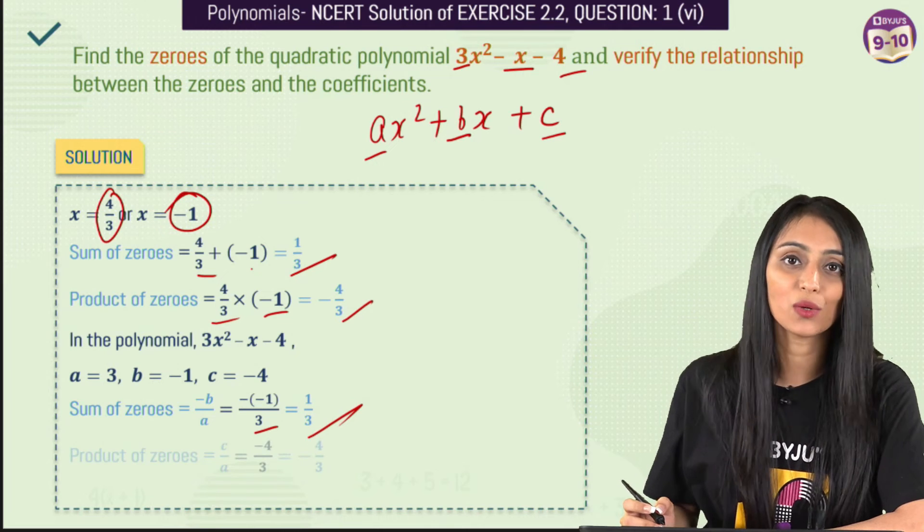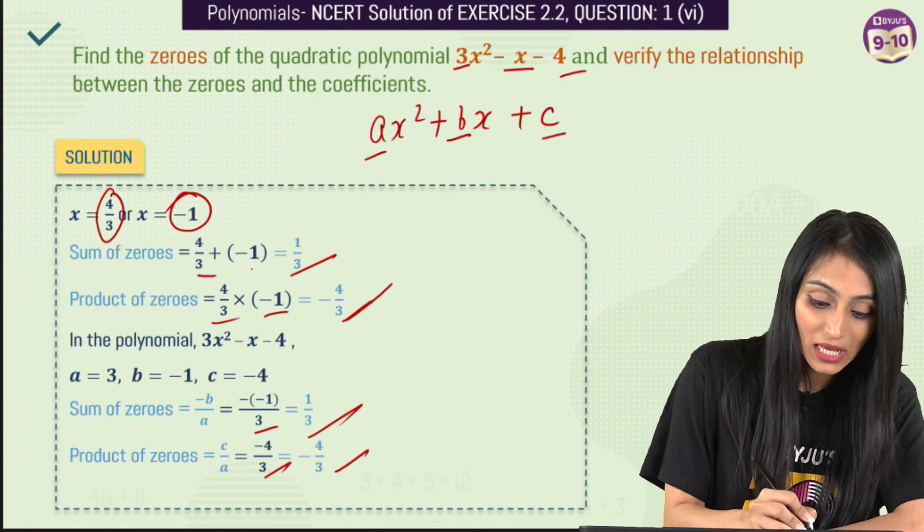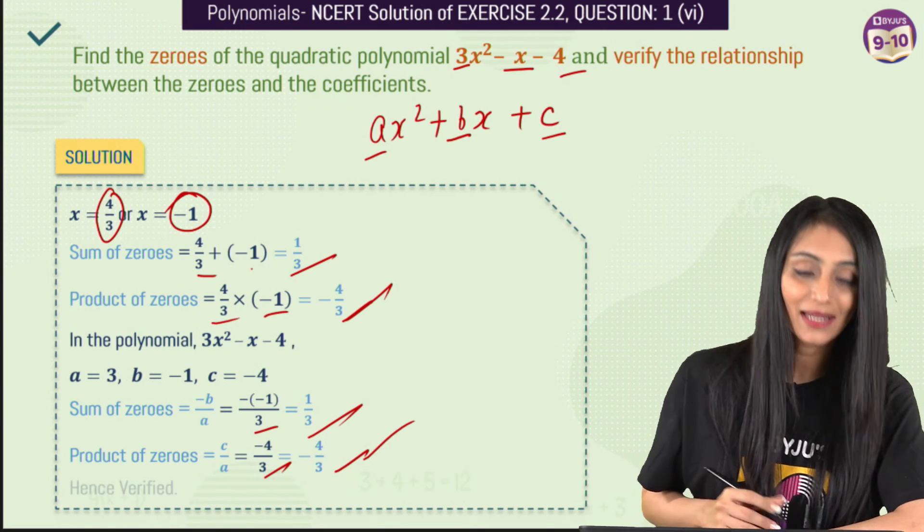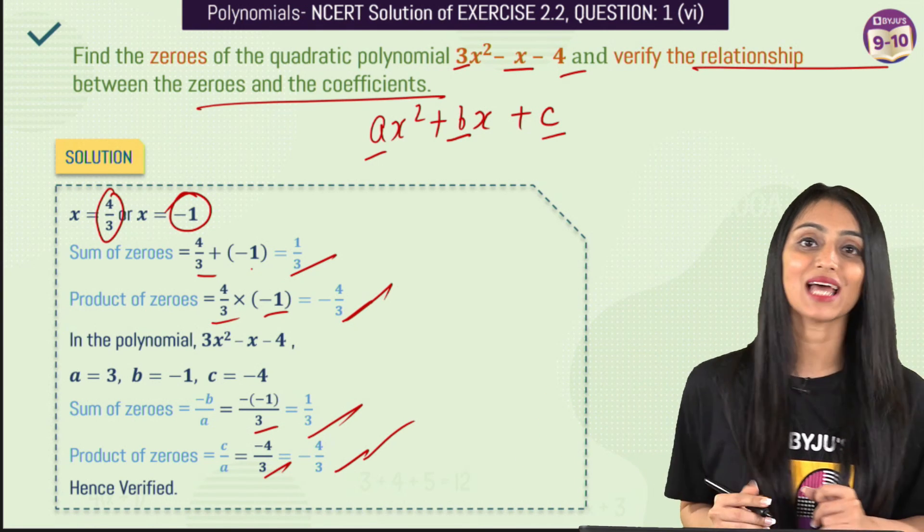Talking about the product of zeros which is c/a, we get -4/3. When I put the values here that is -4/3. This is also same. So I can say that hence verified. So this verifies the relationship between the zeros and the coefficients.